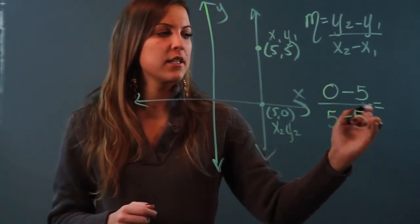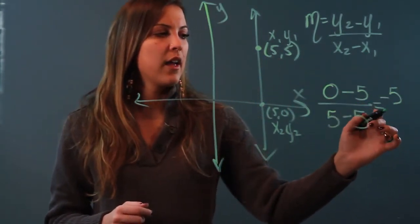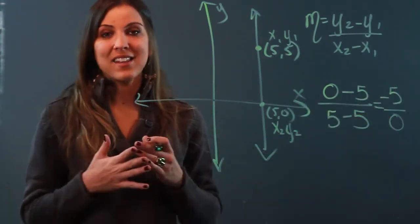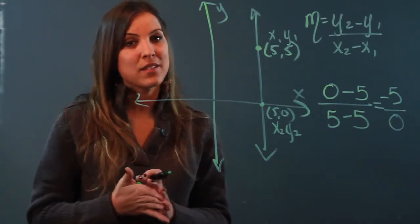When I simplify this, I get 0 minus 5 is negative 5 and I get 5 minus 5 is 0. And negative 5 divided by 0 is not 0 because in math I'm not allowed to divide by 0.